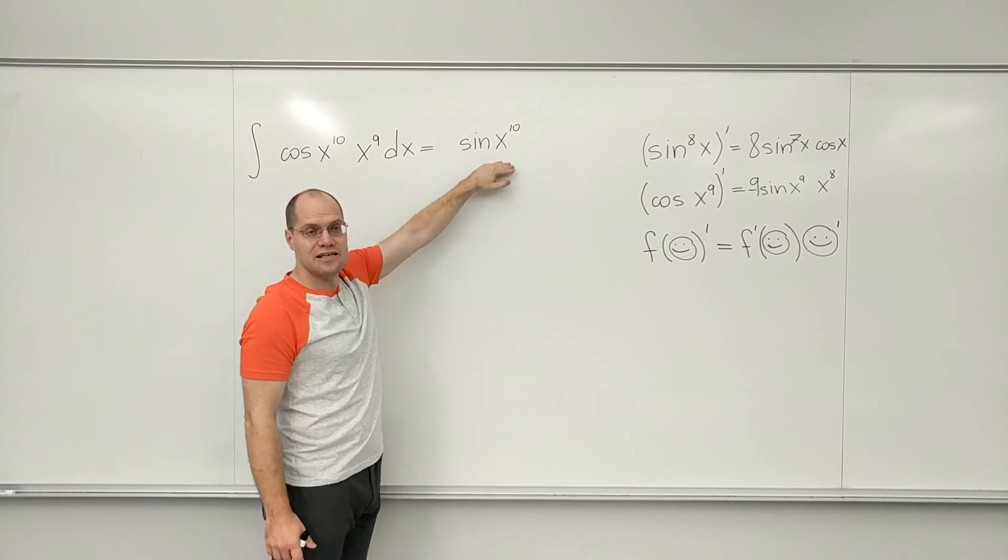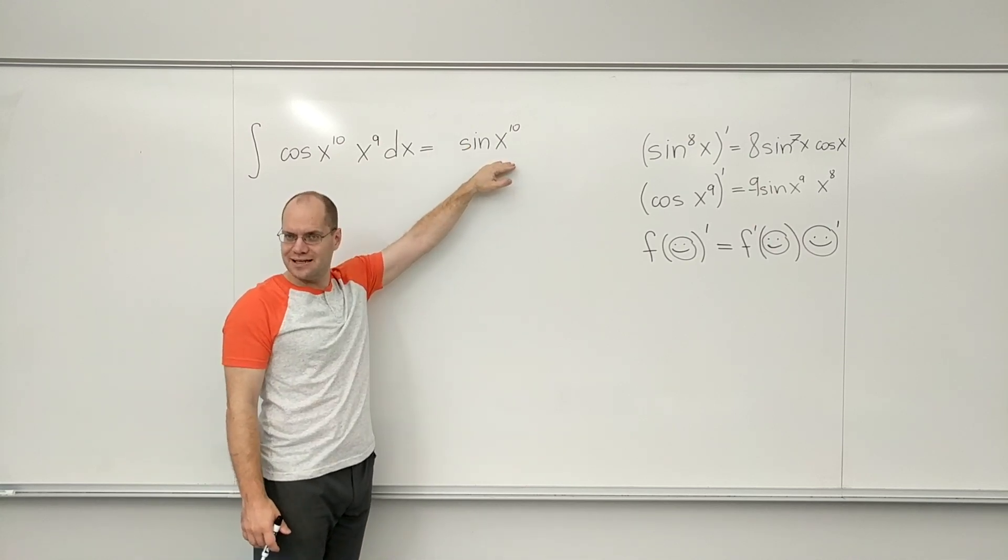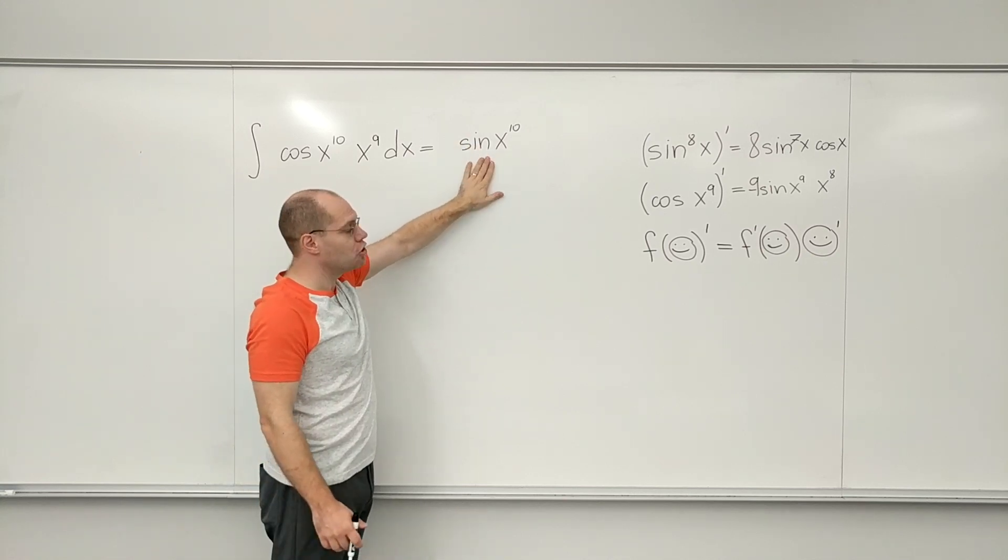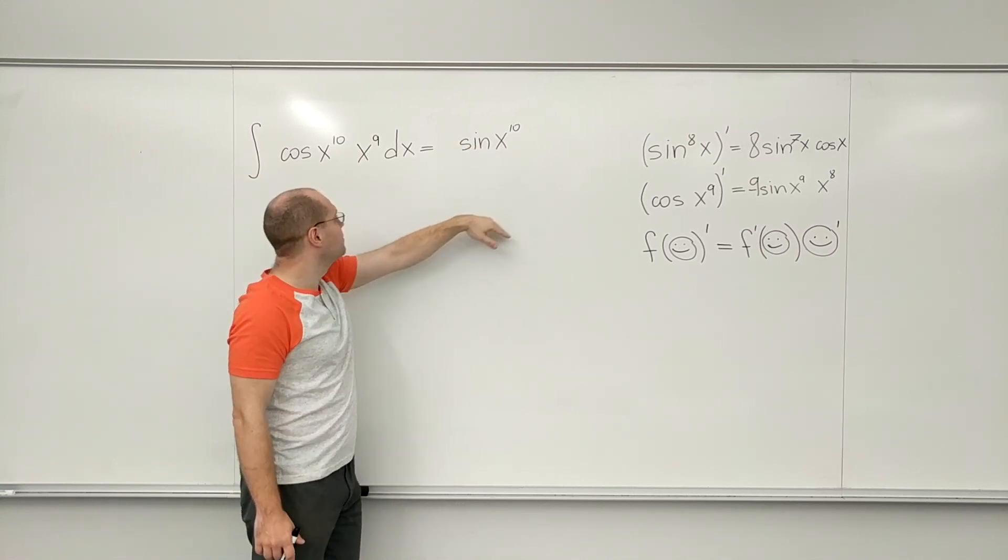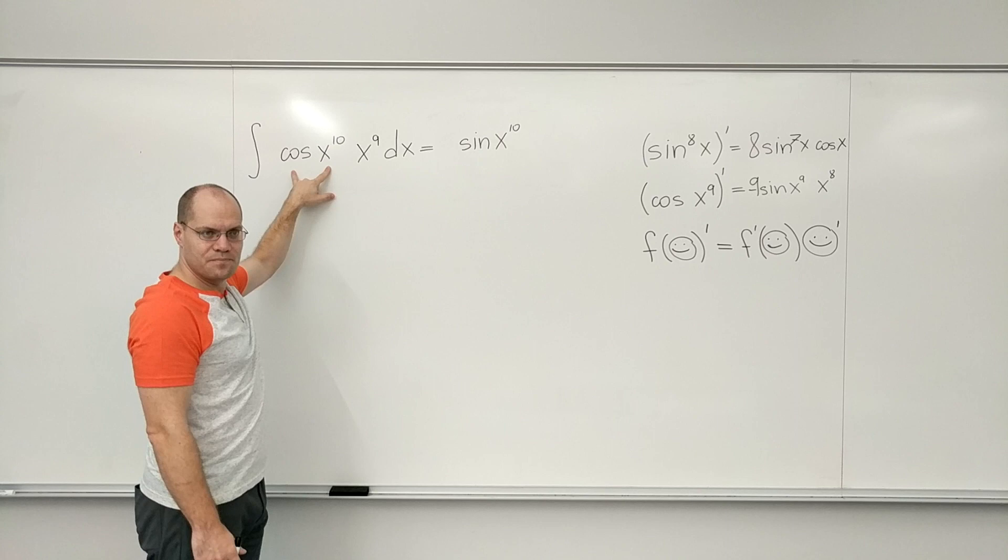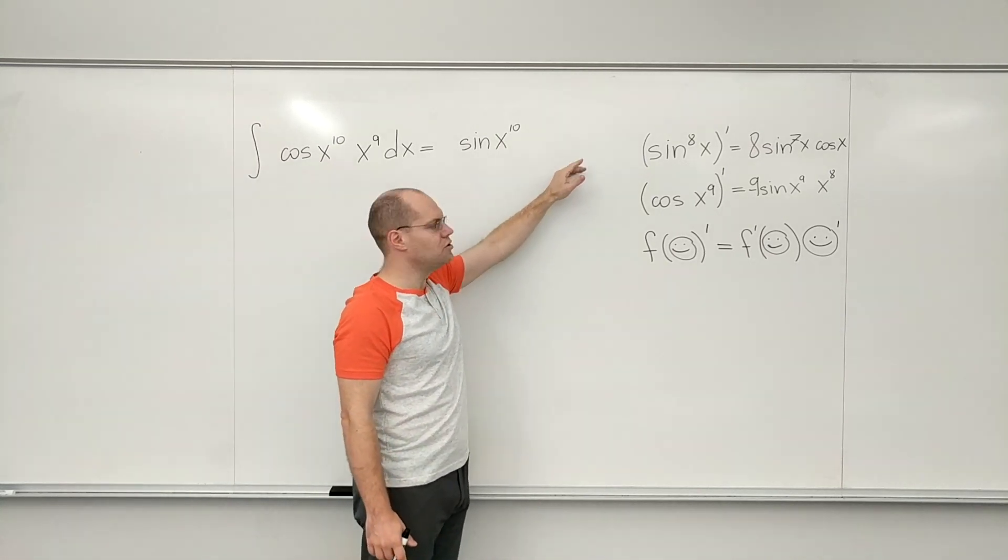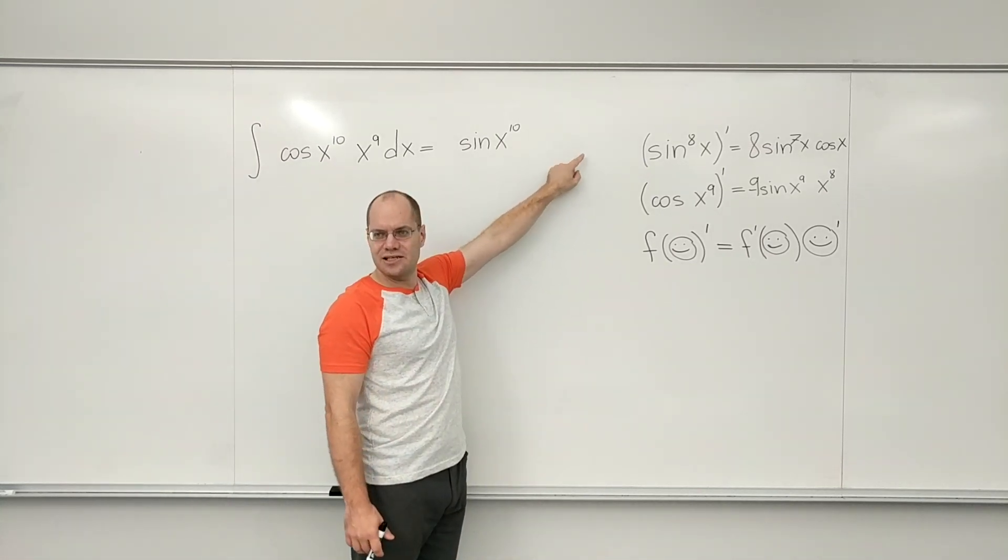I will now start taking the derivative of this in my head. And I will realize that it will be cosine of x to the tenth, which is what I have, which is great. And then rolling with the chain rule, I will have 10 times x to the ninth.